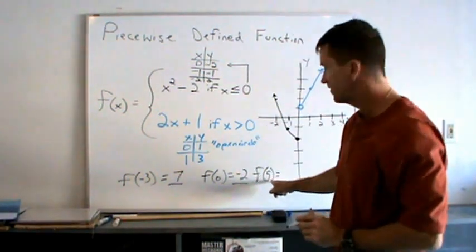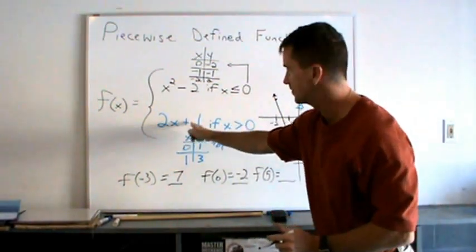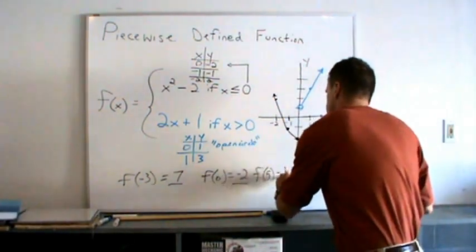And lastly, what's f of 5? We substitute this one as 5 is greater than 0. 2 times 5 plus 1 is 11.